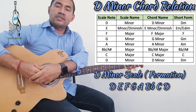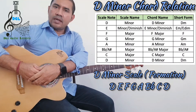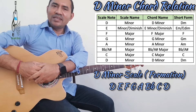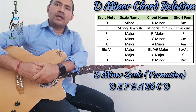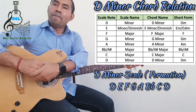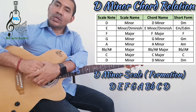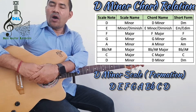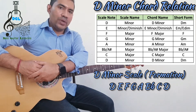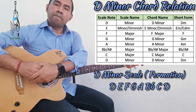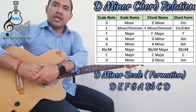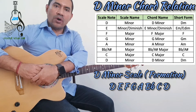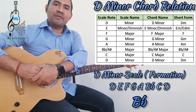Hi friends, again I am with you with a new lesson. Today our lesson is D minor chord relation. D minor chord relation is also related with the D minor scale. The D minor scale has one flat note which is B flat.